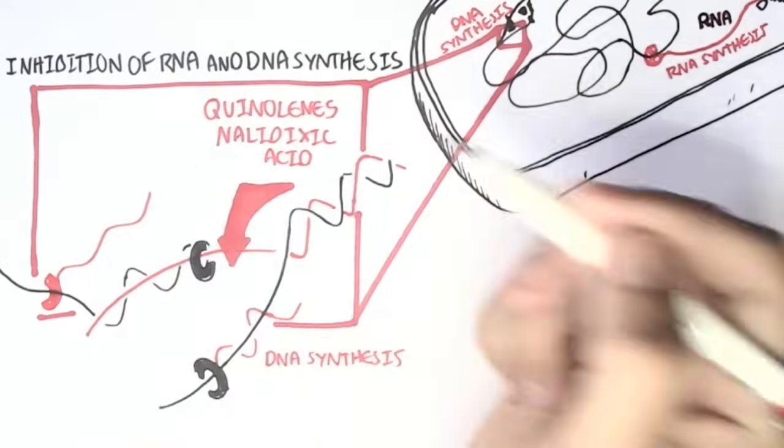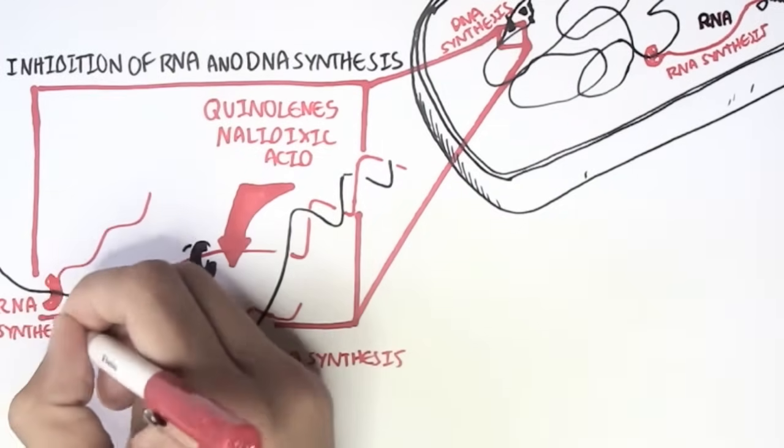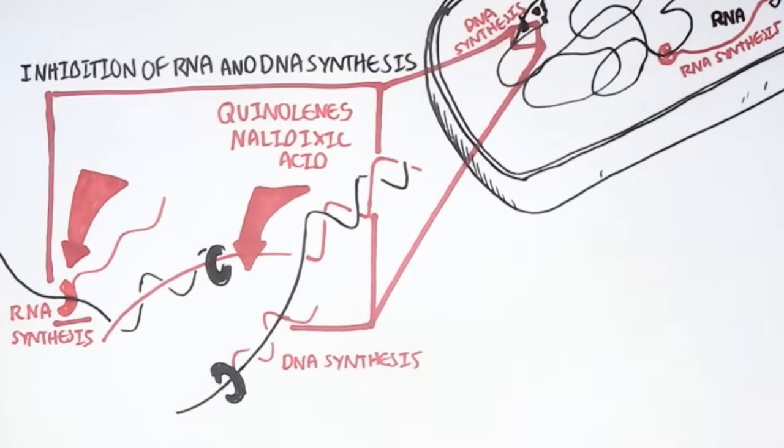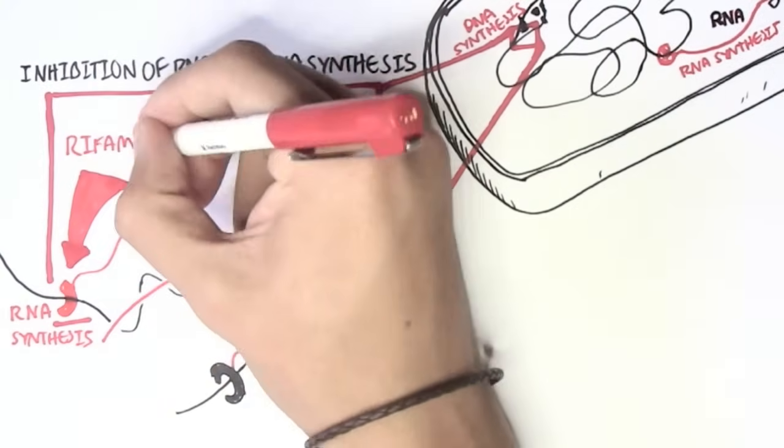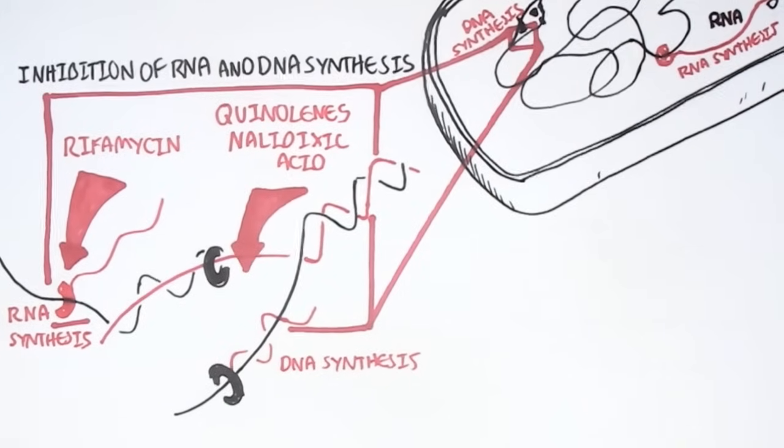RNA can be made from the DNA. There are drugs such as rifamycin, which prevents RNA synthesis and therefore protein synthesis.